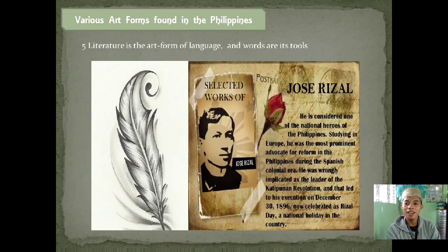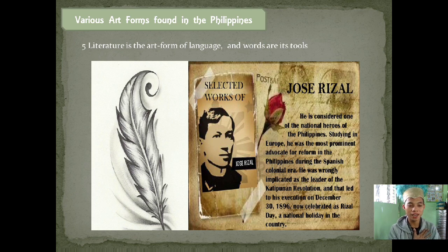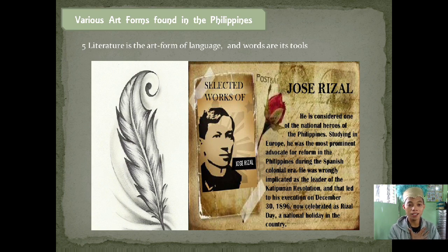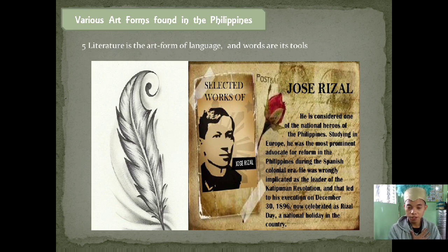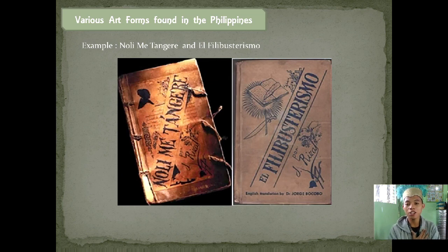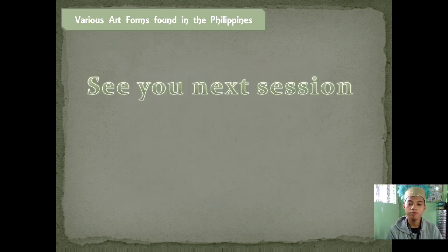Number five under performing arts is literature — the art form where language and words are its tools. The best example is the novels of Dr. Jose Rizal, which are the most famous literature from the Spanish period. His novels, the Noli Me Tangere and El Filibusterismo, discuss how badly the Spaniards treated us, though not all of them were oppressive.